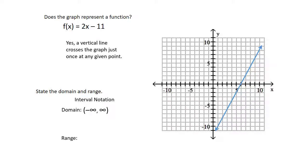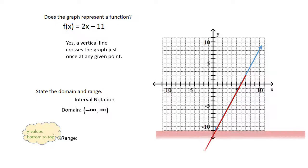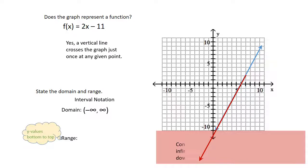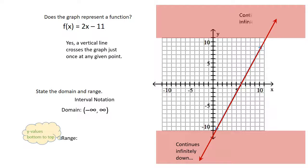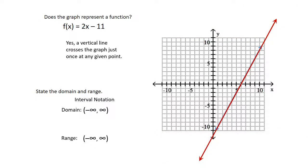The next thing we're going to think about is the range — thinking y values, bottom to top. What does this graph do at the bottom? It will continue infinitely in a downward direction. How about the top? With the arrow, it will also continue infinitely in an upward direction. So for the bottom-most value we're going to put negative infinity, and for the top-most we're going to put positive infinity. This graph is showing a domain of negative infinity to positive infinity, and a range of negative infinity to positive infinity.